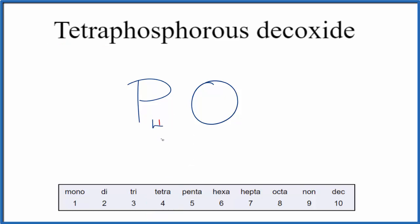And then dek means 10, so we'll have P4O10.